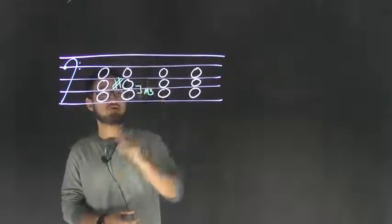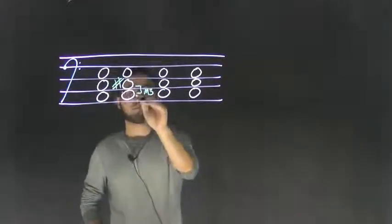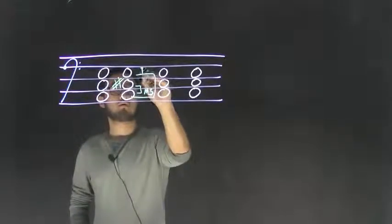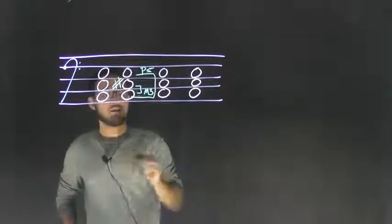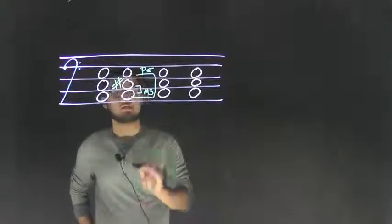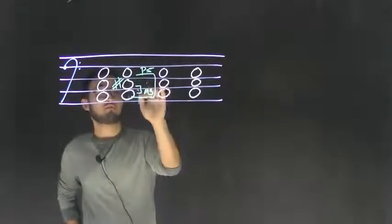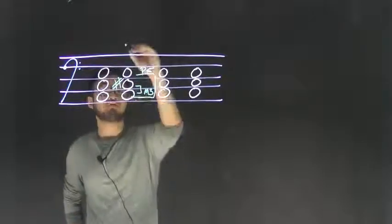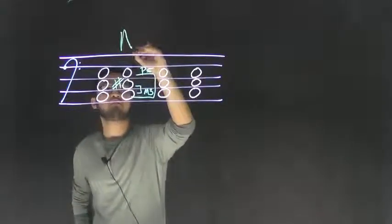In A major, E would be natural. So right here we have a perfect fifth and a major third. That means we have a perfect fifth major third. This is going to be a major triad. We would label it from the root. The root's A, so we have an A major triad.